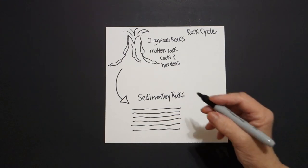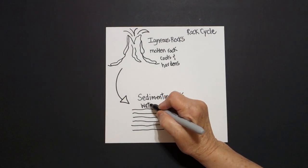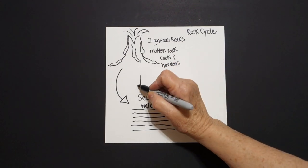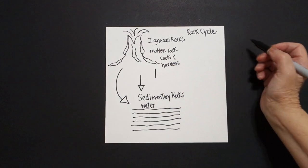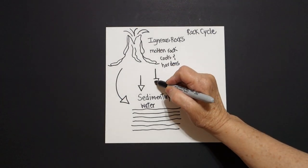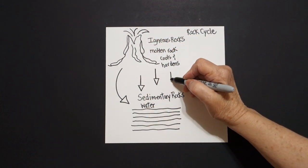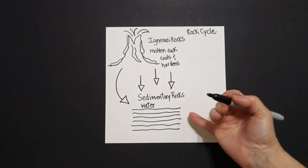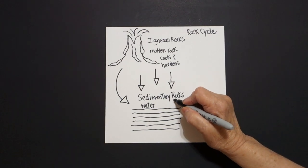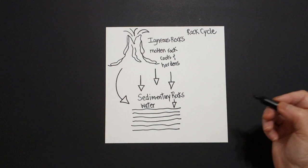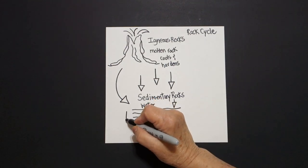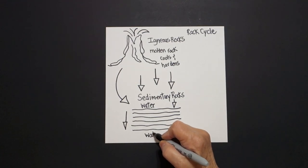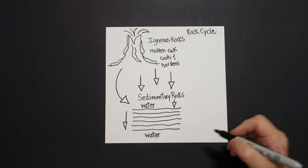Sedimentary rocks are pressed by water. So to show that there's pressure, we're going to draw a straight line and triangle, straight line, triangle — so that you can see the pressure coming down. Straight line, triangle. It hits all parts of it: straight line, triangle, straight line, triangle. It's all with water and pressure, so we'll put 'pressure.'